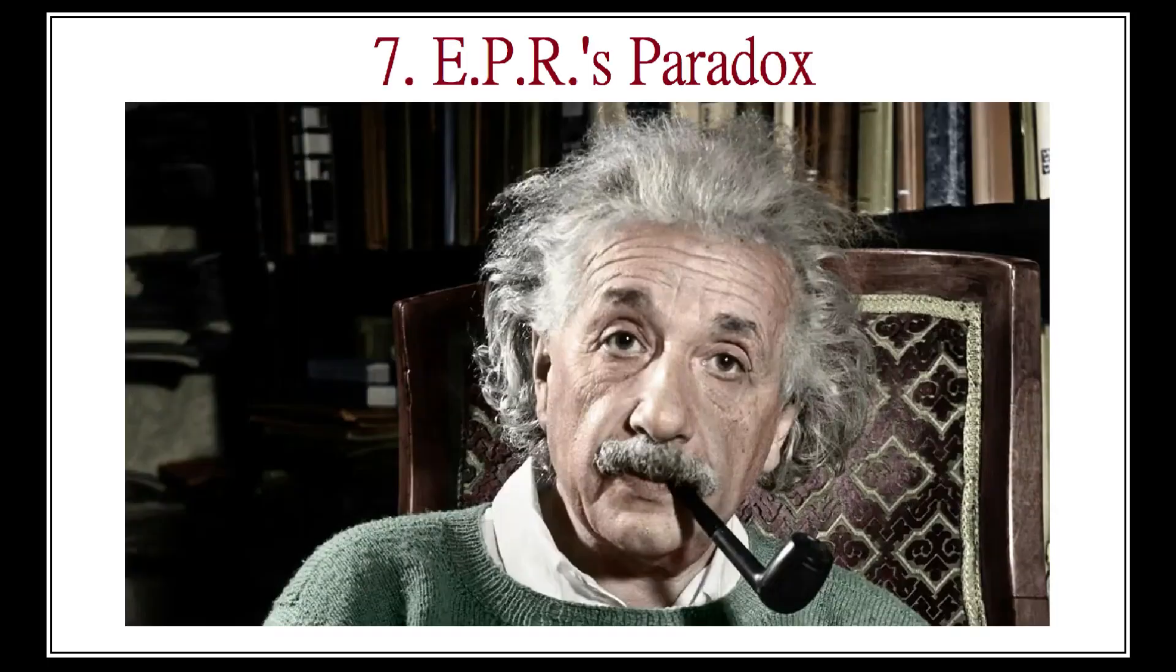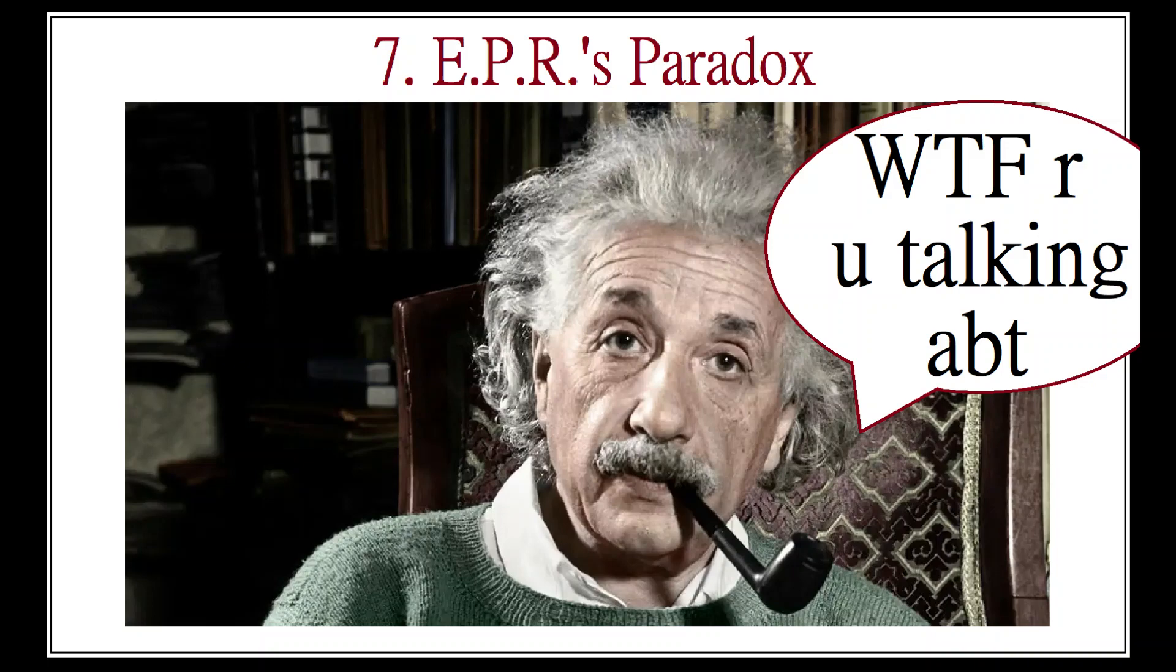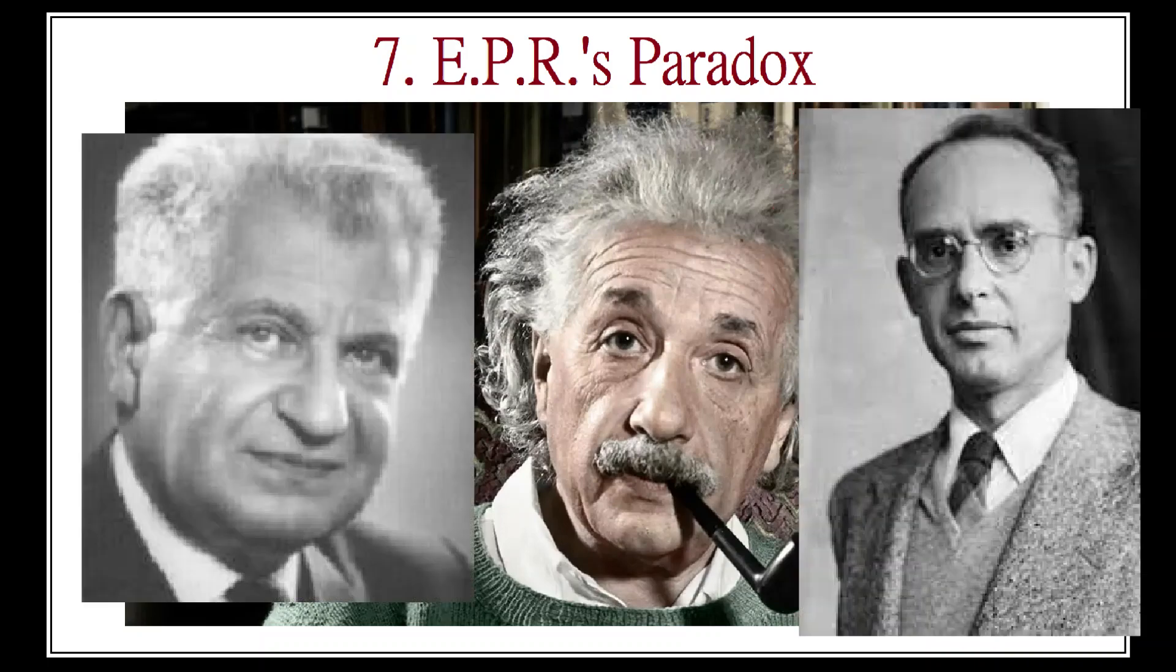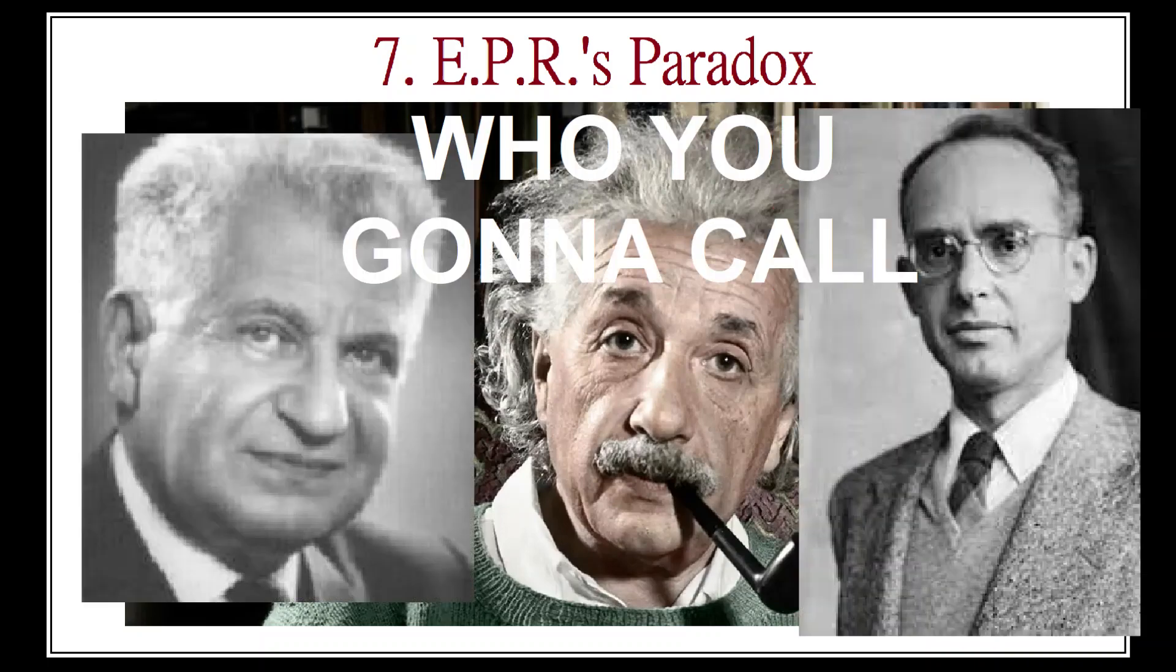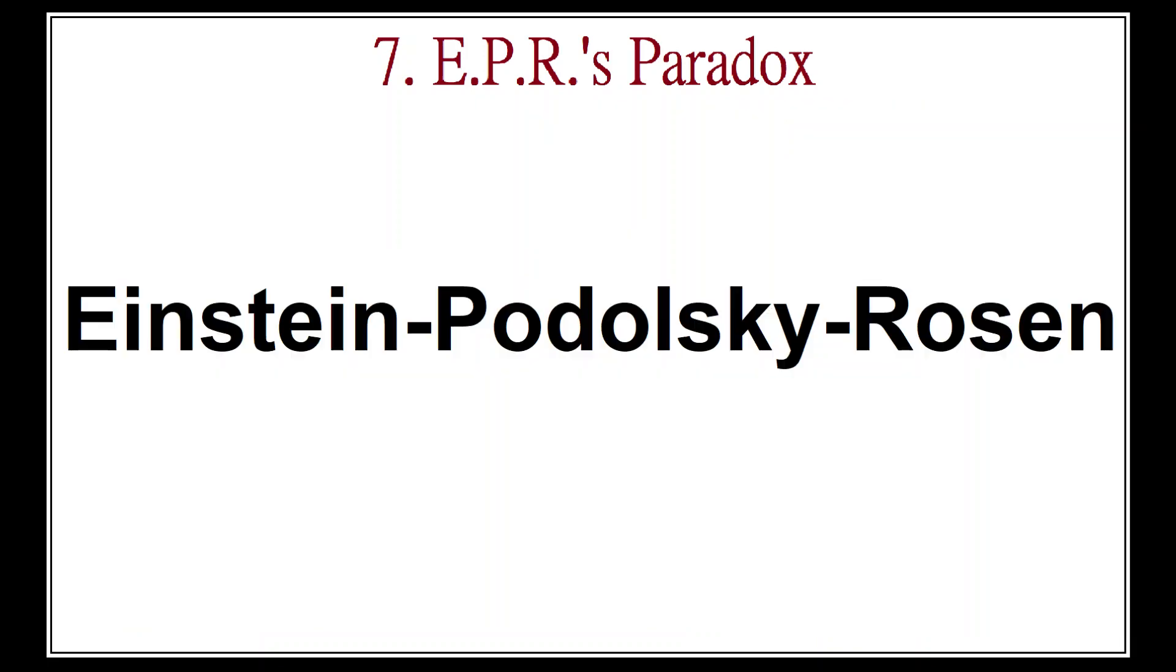One of the scientists who was dissatisfied with Bohr's conclusions was Albert Einstein. Along with Boris Podolsky and Nathan Rosen, he attempted to crystallize his concerns in the form of a reductio ad absurdum argument known as the Einstein-Podolsky-Rosen paradox.